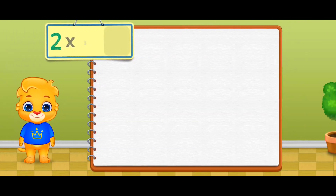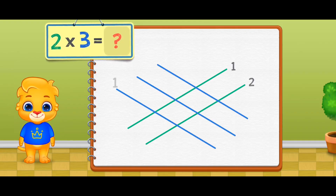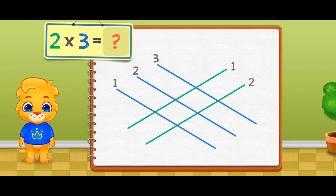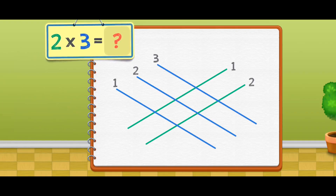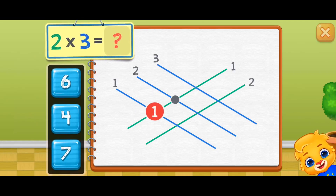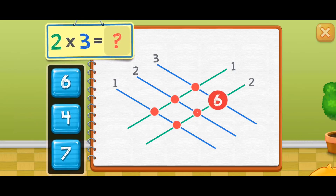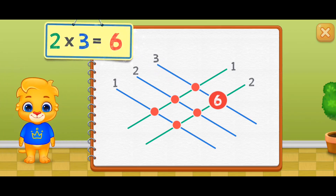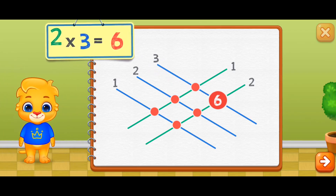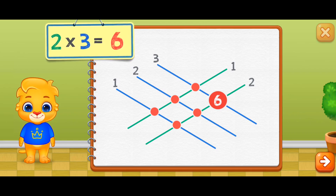Two times three equals — one, two, three, four, five, six. Two times three equals six.